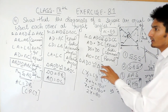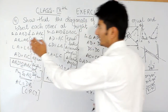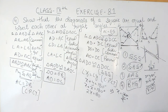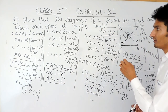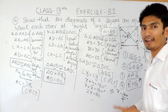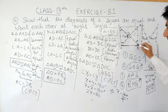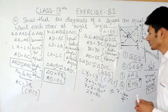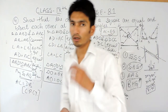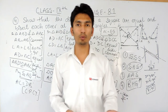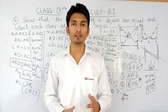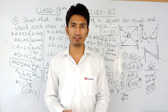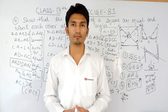So, to summarize: in the first part we proved that the diagonals of a square are equal; in the second part, we proved that they bisect each other; and in the third part, we proved that they bisect each other at right angles — meaning the angle formed by the two diagonals is 90 degrees. I hope you understood how to solve this question. If you have any problems, you can contact us — the phone number, email address, and WhatsApp number are given in the description below. Thank you.